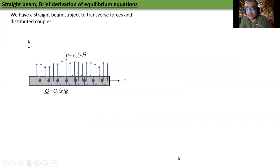Straight beam: Brief derivation of equilibrium equations. We have a straight beam subjected to transverse forces PY and distributed couples CZ. The subscript tells you which way things are pointed. The transverse forces are pointed in the positive Y direction and the couples are pointed in the positive Z direction. That is the axis of the couples.